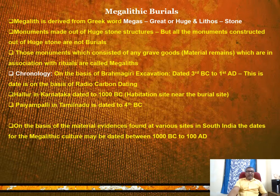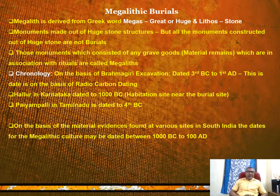The Megalithic culture is so called because the monuments erected for the deceased during this period were erected with huge undressed stone boulders. Mega means great or huge, litho means stone - so monuments made out of huge stones. This Megalithic culture is also called Iron Age culture because iron implements can be identified from megalithic habitation and burial sites. It is also called Black and Red Ware culture because Black and Red Ware pottery was identified at almost all megalithic cultural sites.